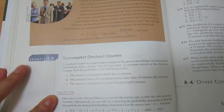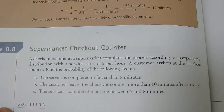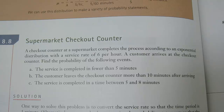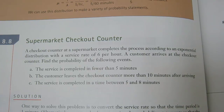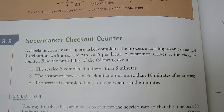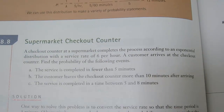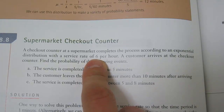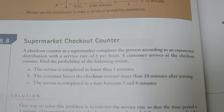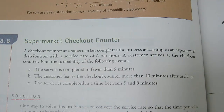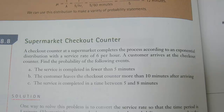Let's borrow this question straight from the textbook: a checkout counter at a supermarket completes the process according to an exponential distribution with a service rate of 6 per hour. A customer arrives at the checkout counter. Find the probability of the following events. The first thing to notice is that the question asks about minutes, but lambda is given in terms of per hour — 6 customers per hour — so we need to convert to per minute.